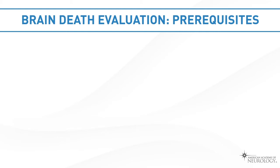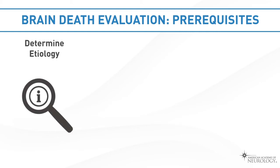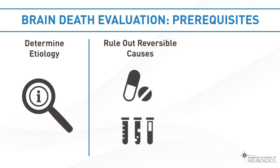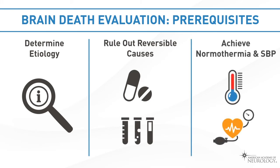Prerequisites that must be met before performing a brain death examination include: identifying a known etiology for irreversible loss of function of the entire brain; ruling out reversible causes of coma, including the effects of CNS depressants or paralytics, as well as severe electrolyte, acid-base, or endocrine disturbances; and achieving normothermia and a systolic blood pressure greater than 100.